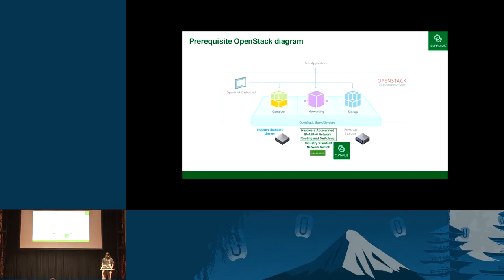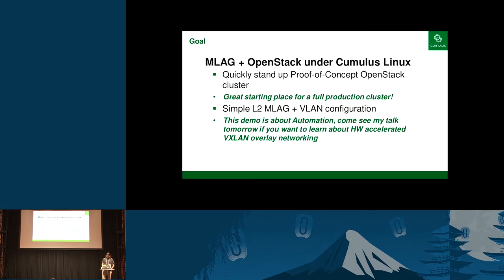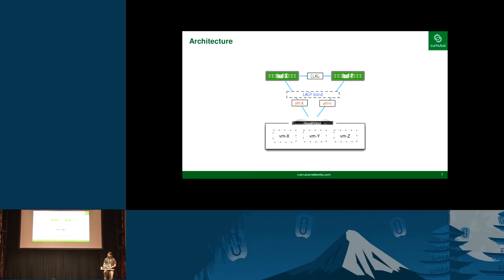Here's the standard OpenStack diagram that you've probably seen 100 times today. The automated deployment we're going to push out, to keep it simple, is just your very standard MLAG with VLAN. We're not going to be doing any sophisticated SDN, any VXLAN overlays — because this is just about automation. If you want to learn about VXLAN overlays, come see my talk tomorrow with Mark McLean. It's a very simple MLAG configuration: each hypervisor is connected to two top-of-rack switches, which are configured in MLAG to appear as a single bond to a single switch as far as the server is concerned, providing high availability and double the bandwidth.